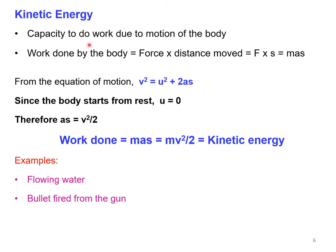Kinetic energy is the capacity to do work due to the motion of the body. It is calculated from the work done: F times S, where F equals ma, giving KE = maS. From the equation of motion v² = u² + 2aS, with initial velocity u = 0, we get v² = 2aS, so aS = v²/2. Substituting, work done equals m times v²/2, giving kinetic energy = ½mv². Examples include flowing water and a bullet fired from a gun.